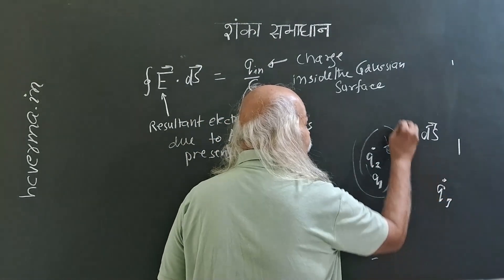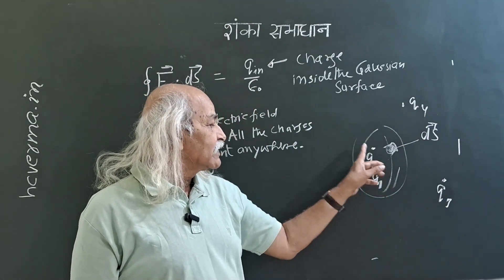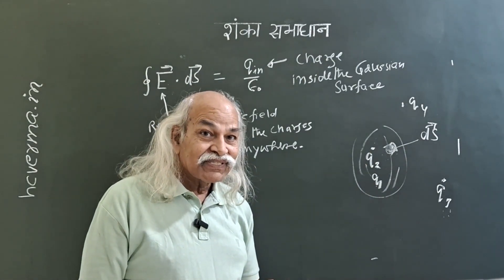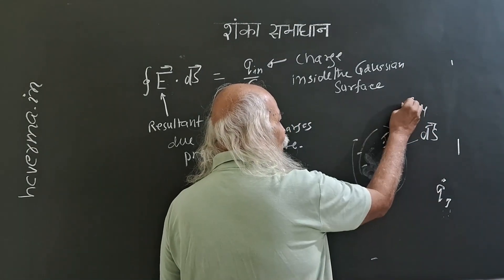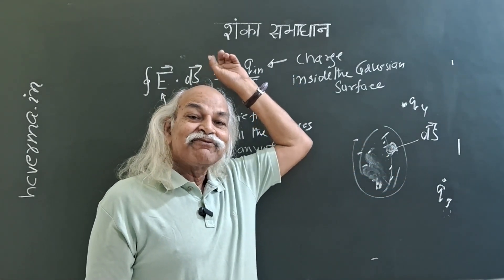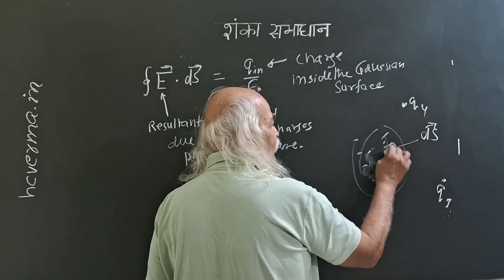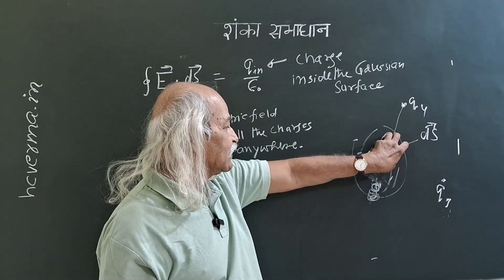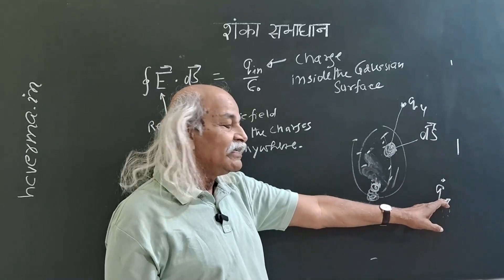But there are also charges q3, q4 outside, and the electric field we are talking about is due to all these charges. It is claimed that the resultant electric field of all charges gives that flux. Why? Because if you take an outside charge, only because of this outside charge, how much is the flux through the closed surface? If you have an area element here, you also have an element on the other side where the field line crosses. The E dot ds is positive on one side and negative on the other. So the total flux due to outside charges is zero.